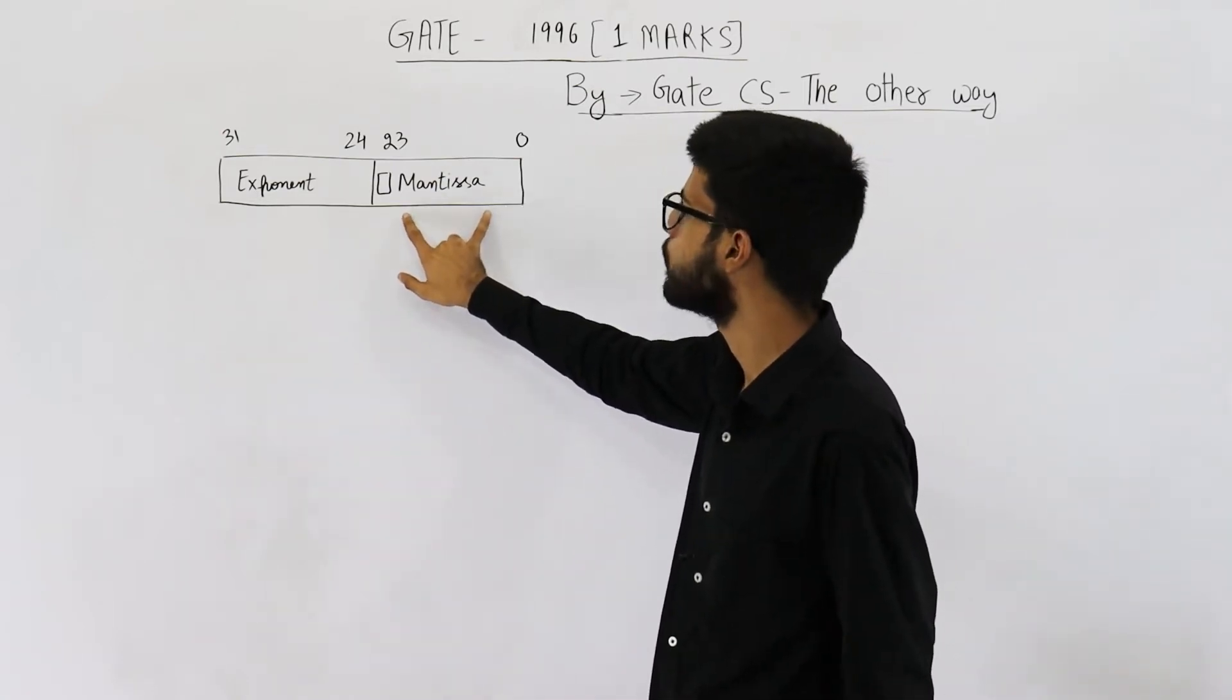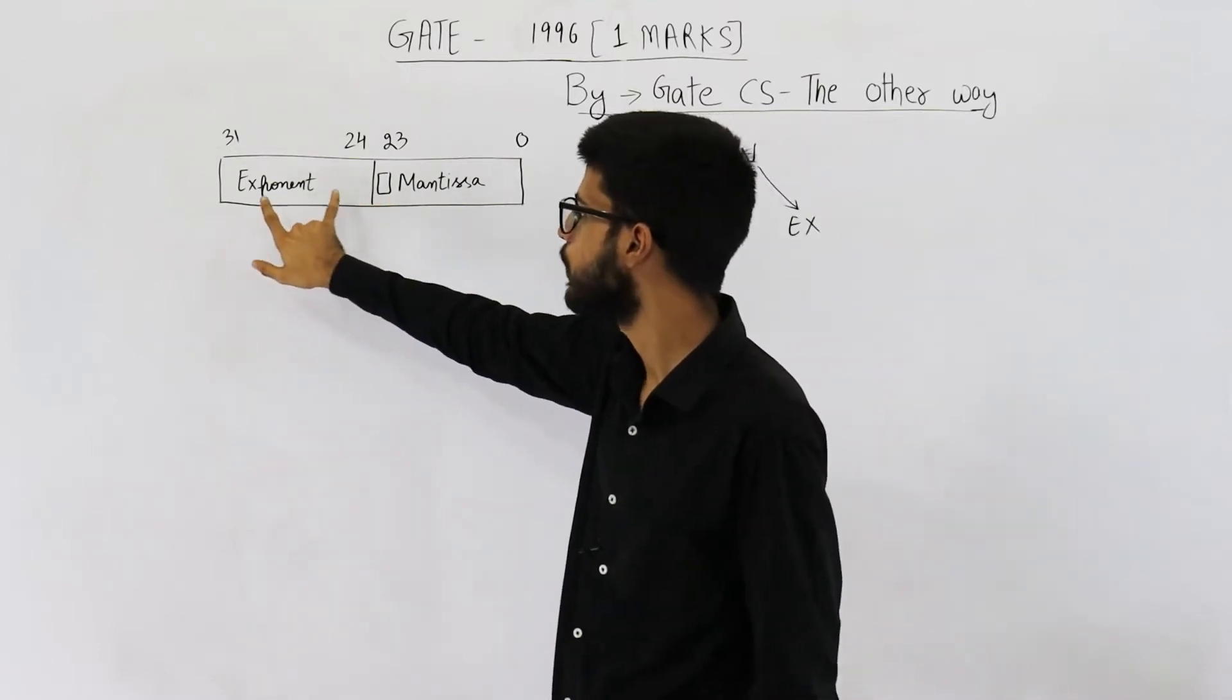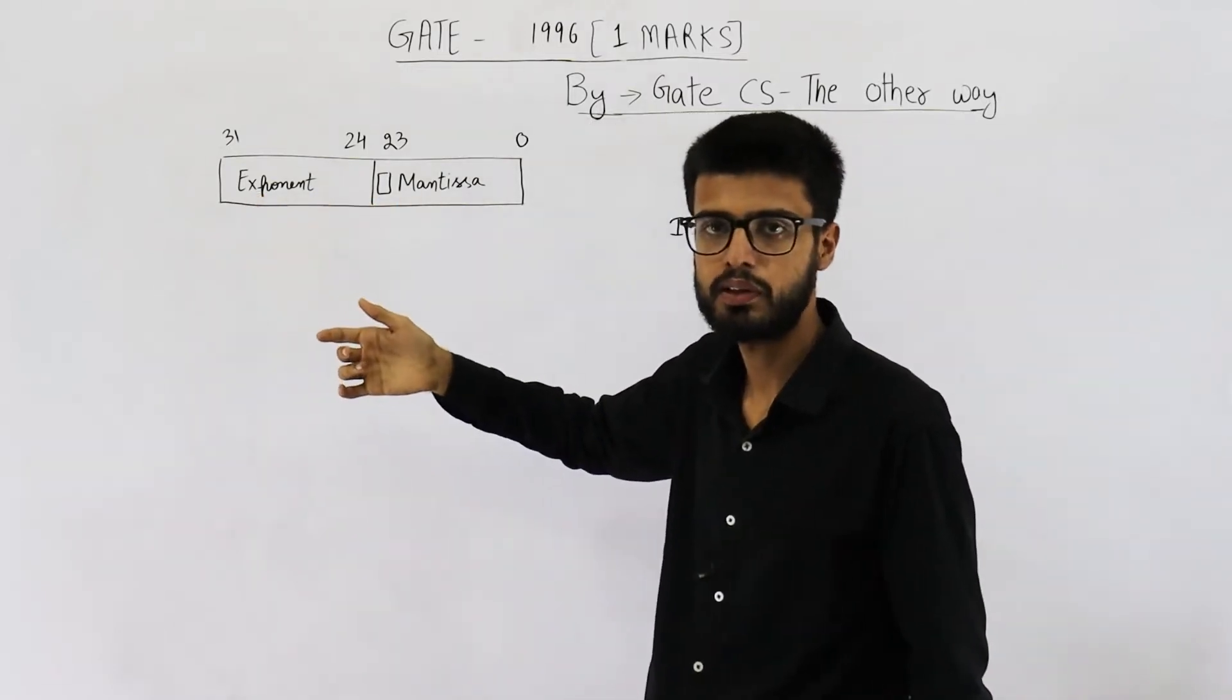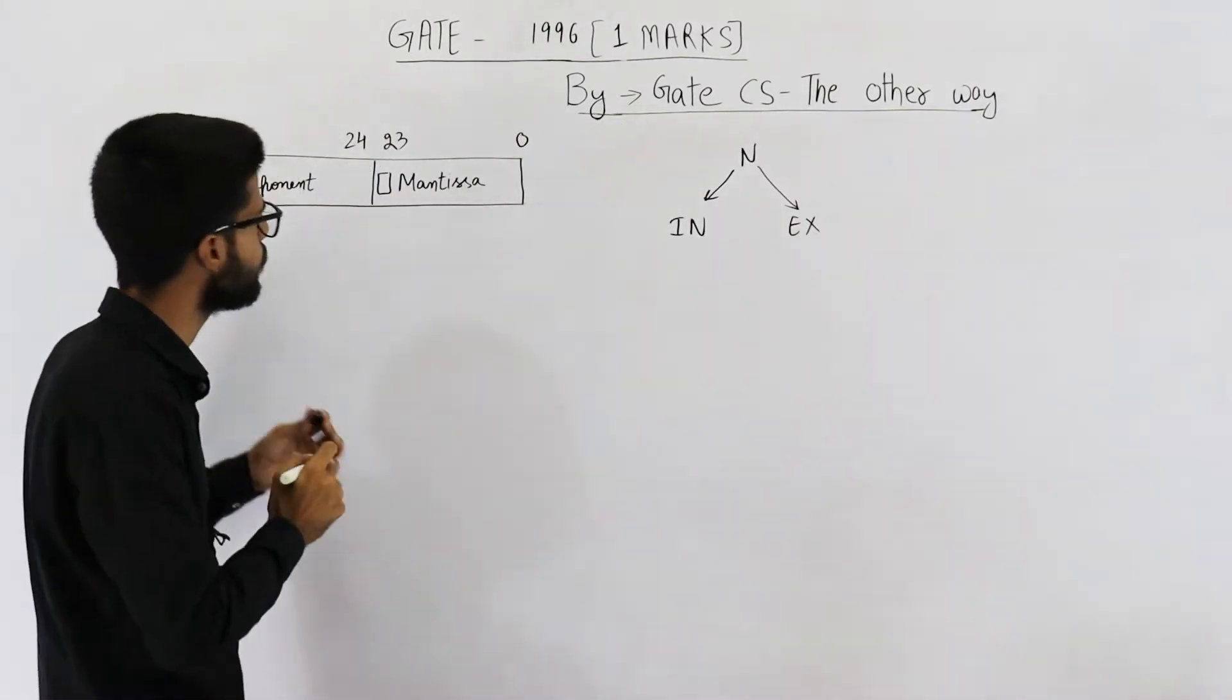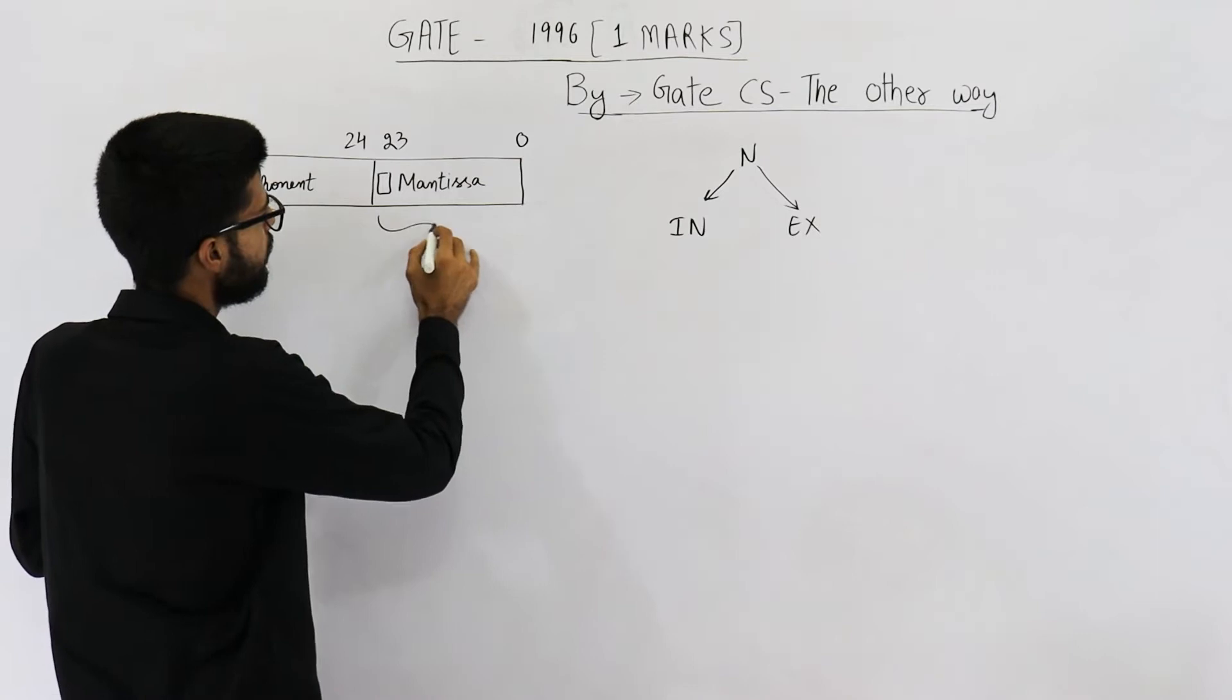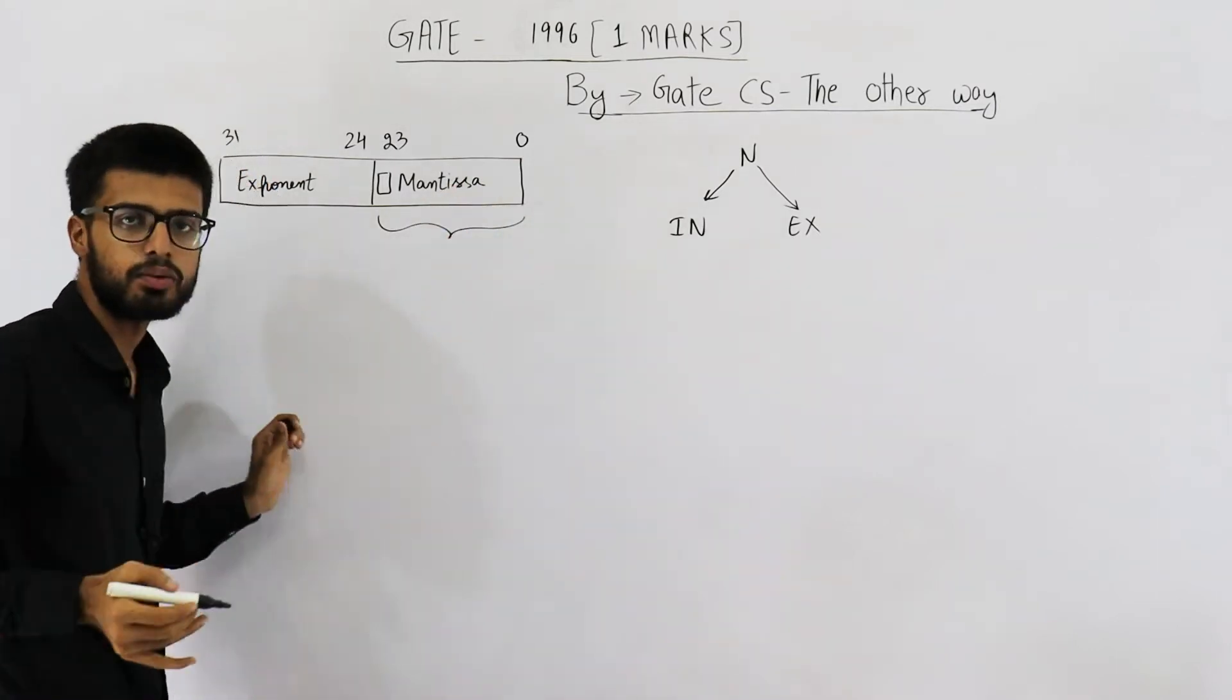Magnitude will depend on mantissa. We need not discuss about exponent of the number. We want to know the magnitude of number. Magnitude can be defined by analyzing these 24 bits.